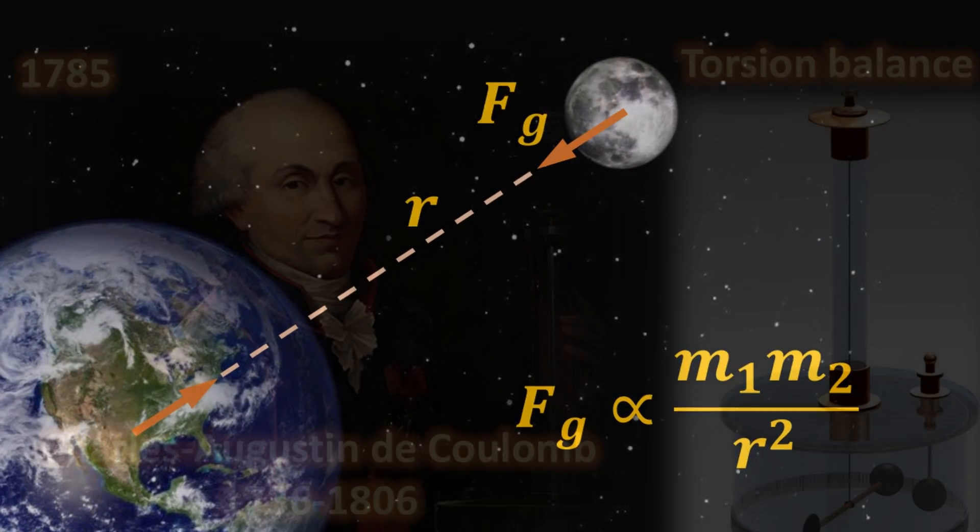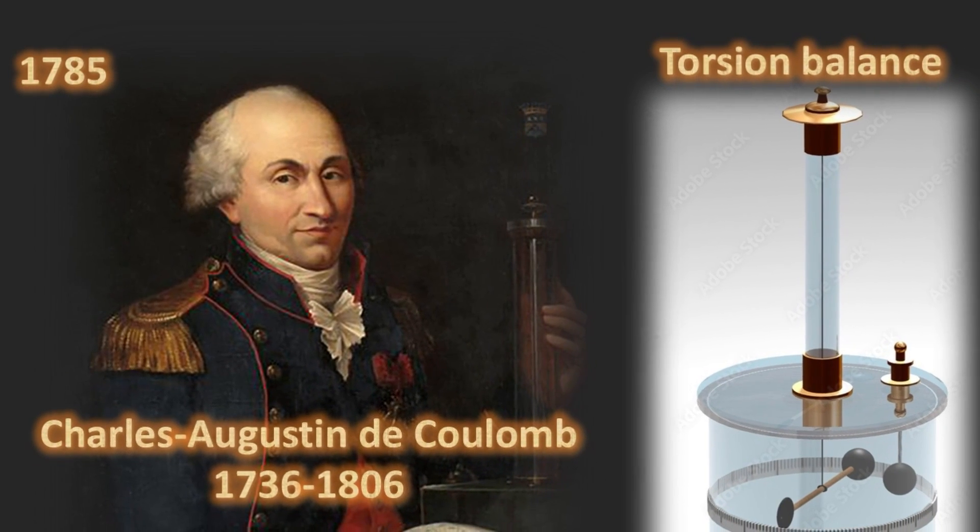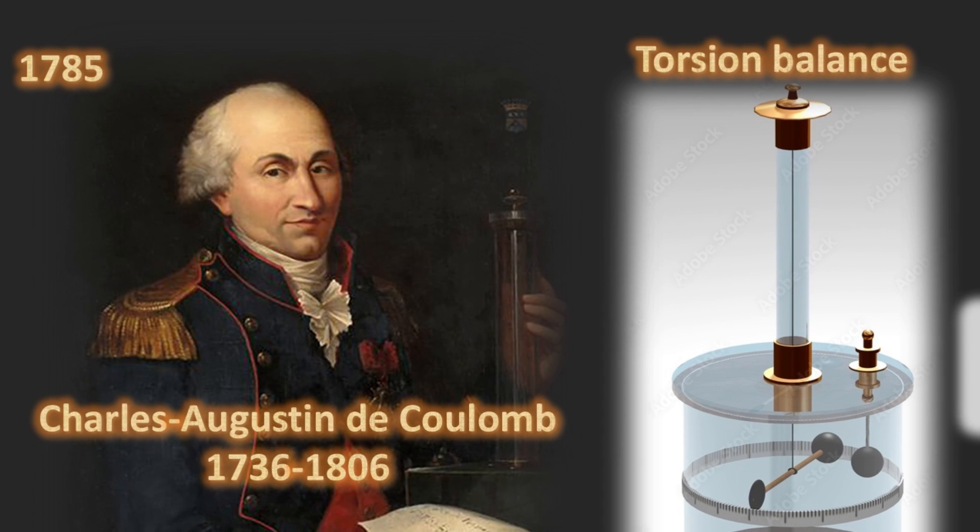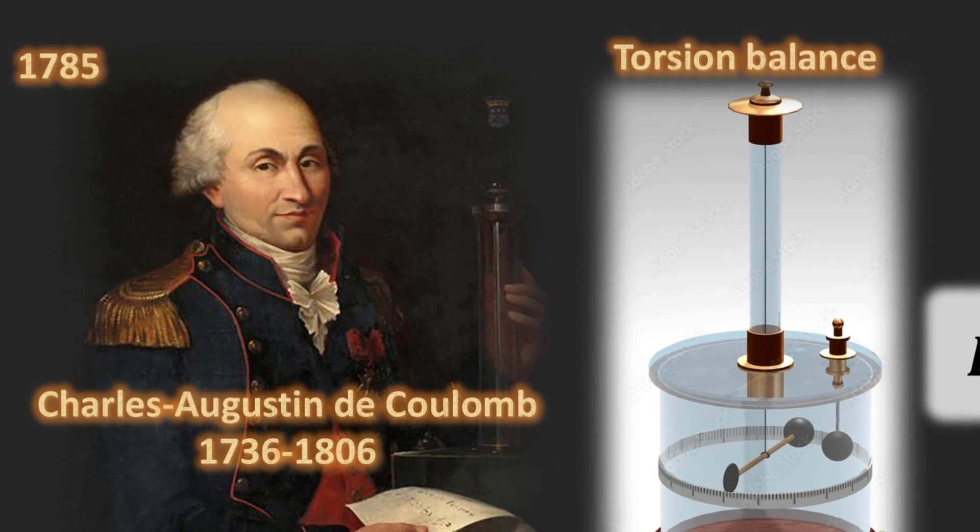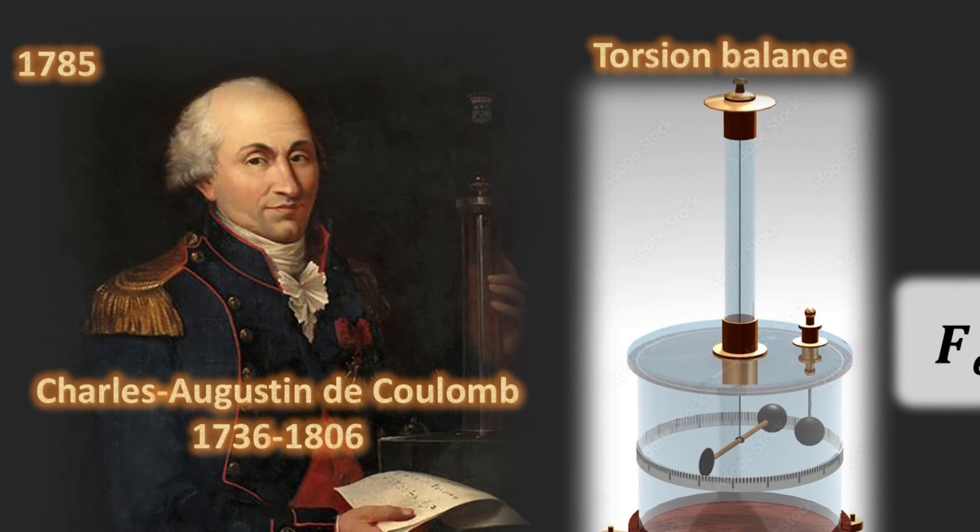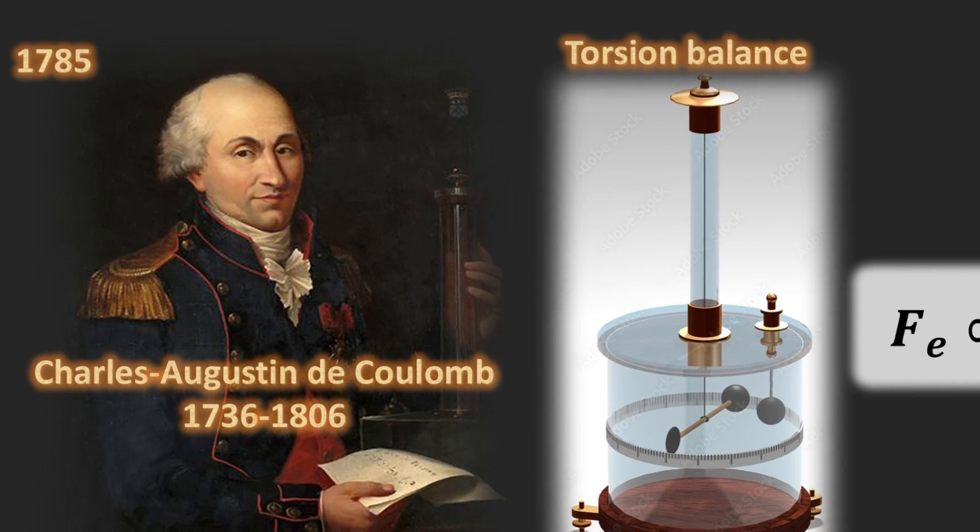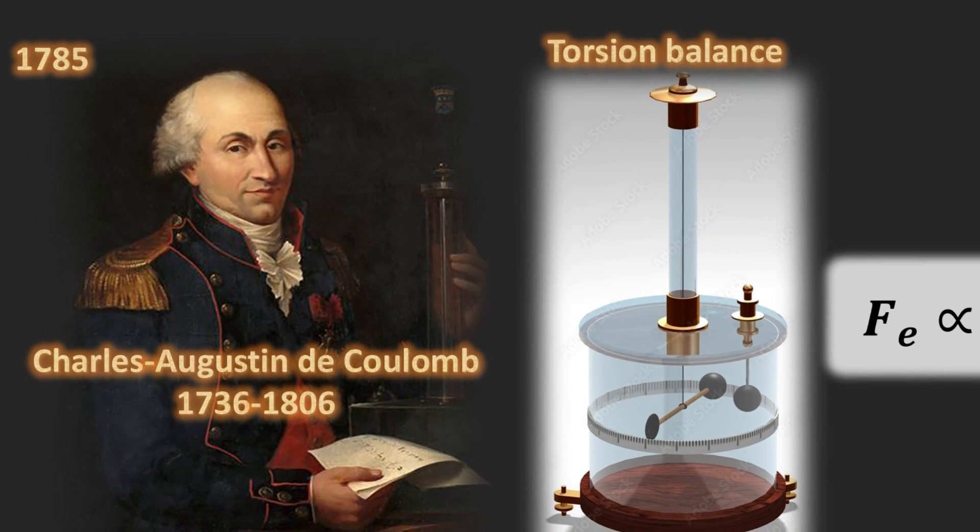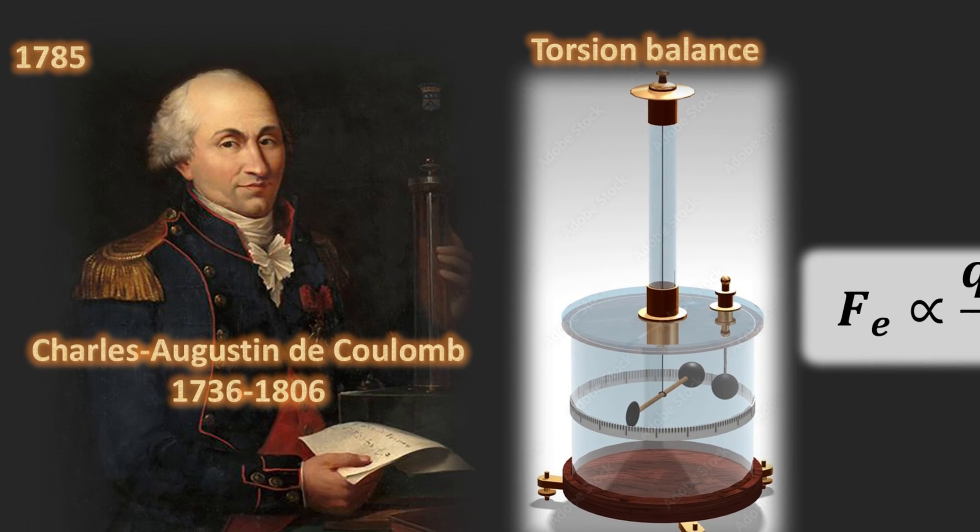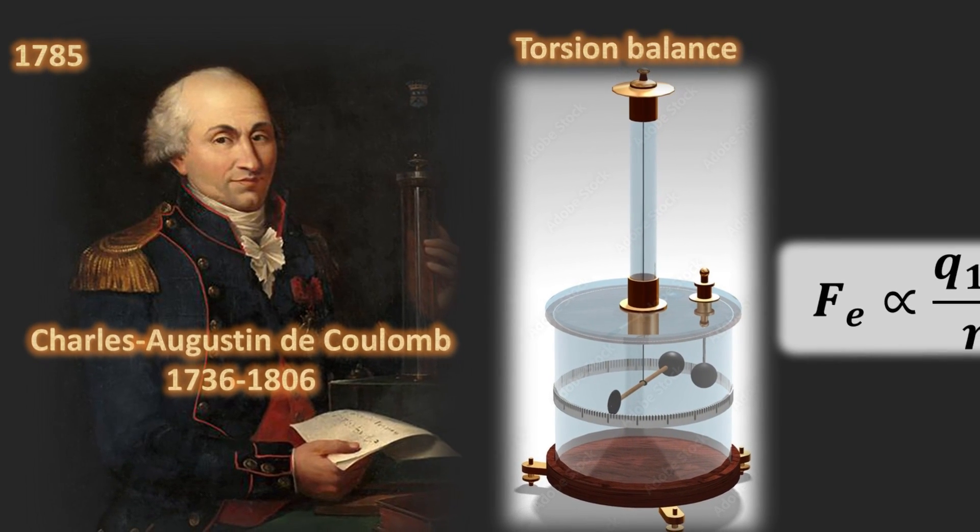In 1785, French physicist Charles-Augustin de Coulomb did a series of definitive experiments with a torsion balance to study the repulsion and attraction forces of charged particles. He determined that the magnitude of the electric force between two point charges is directly proportional to the product of the charges and inversely proportional to the square of the distance between them.